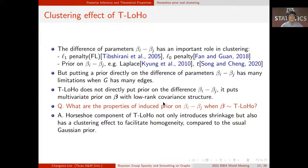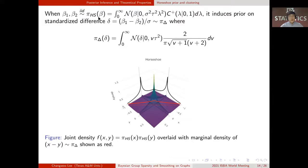So when beta 1 and beta 2 follow independent Horseshoe prior, we can calculate the marginal density of standardized difference, delta, as shown here. It does not have a spike at the origin like a horseshoe, but it has a heavier tail than horseshoe. We denote this density pi delta.